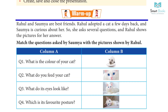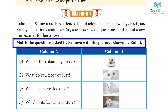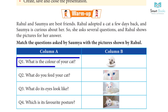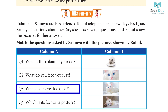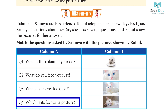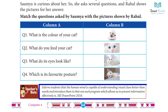Warm-up: Rahul and Soumya are best friends. Rahul adopted a cat a few days back and Soumya is curious about her. She asked several questions and Rahul shows pictures as answers. Questions include: What is the color of your cat? What do you feed your cat? What do its eyes look like? Which is its favorite posture?